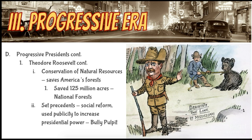Roosevelt was also an avid hunter and outdoorsman, very adventurous. He wanted to conserve America's forests, and being this outdoorsman who got outside regularly, he developed a real affinity and appreciation for the American landscape. He ends up saving 125 million acres and creating the first national forest in the United States. There is also a legend that Teddy Roosevelt once was out hunting, saw a mama bear and her baby cub, and his heart was so touched that he said he could not shoot that bear and leave the baby an orphan. That story spread through newspapers around the country until a toy bear designer decided to name their toy bears the 'Teddy Bear' after Teddy Roosevelt — and that's where we get the name today.